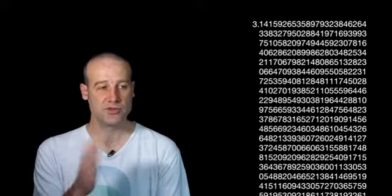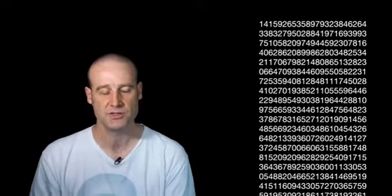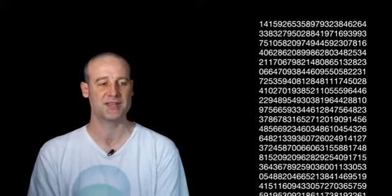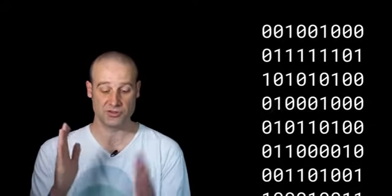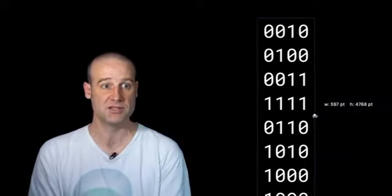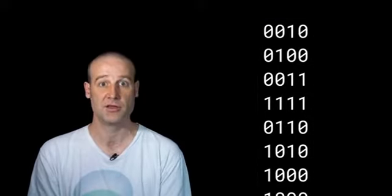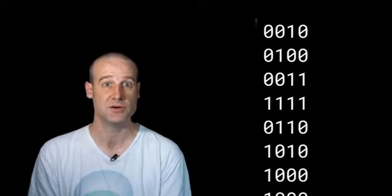So I took pi, removed the three-point as is tradition when doing these sorts of things, took all the digits after that, converted them into binary, and then reduced the width so they wrap every four digits, coloured those in — zeros as the background, ones as the foreground.